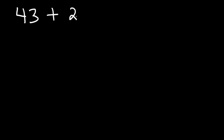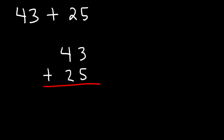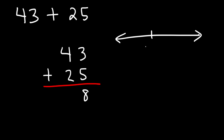Now what about adding a two-digit number with another two-digit number? What is 43 plus 25? When you have a problem like this, it's best to write them in column format and then add the numbers individually. So first we add 5 plus 3, which is 8. And then 4 plus 2 — starting with 4 and traveling 2 spaces to the right — gives us 6. So 43 plus 25 is 68.